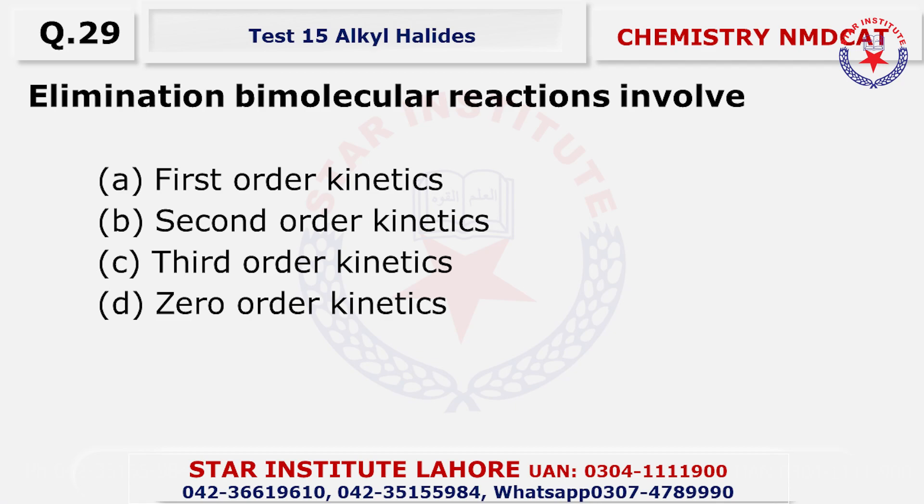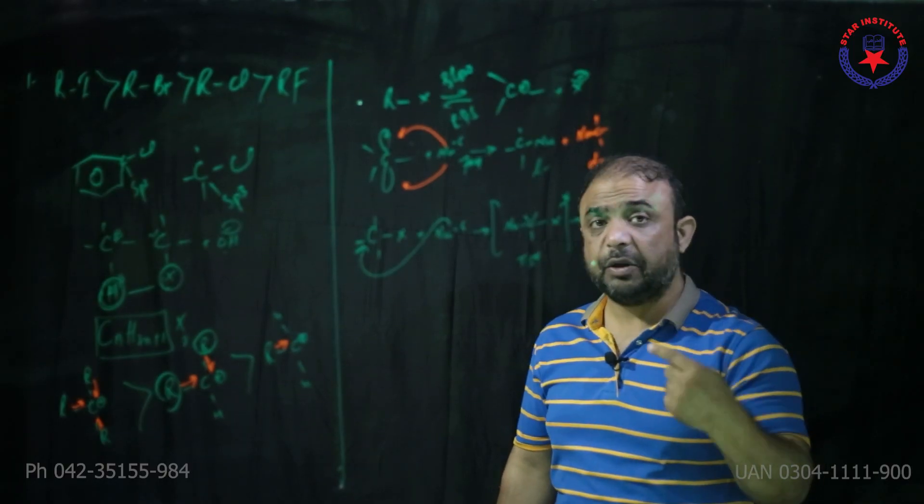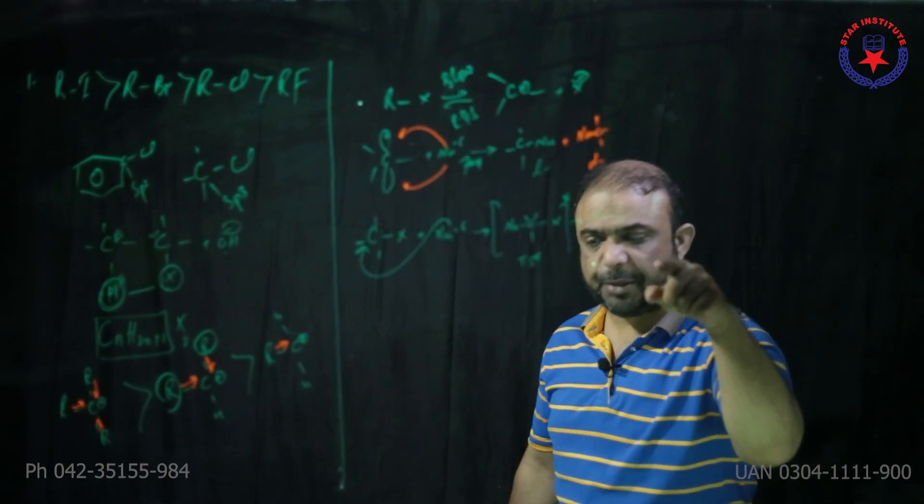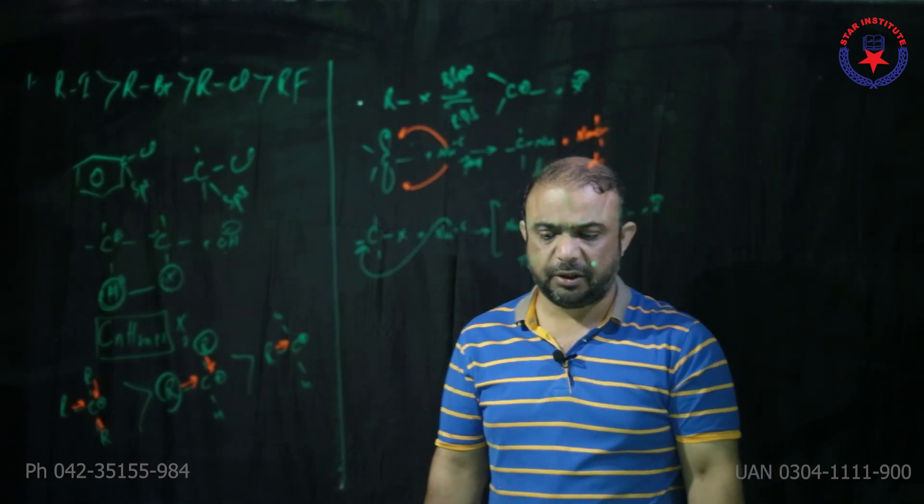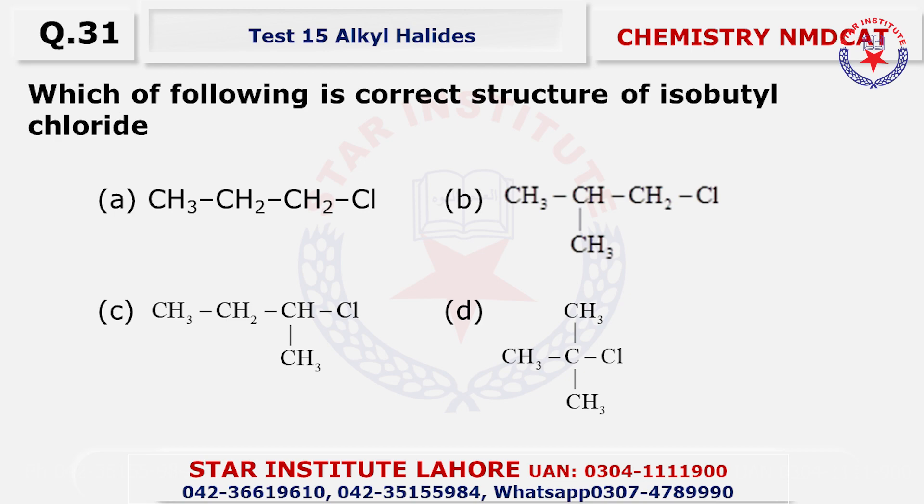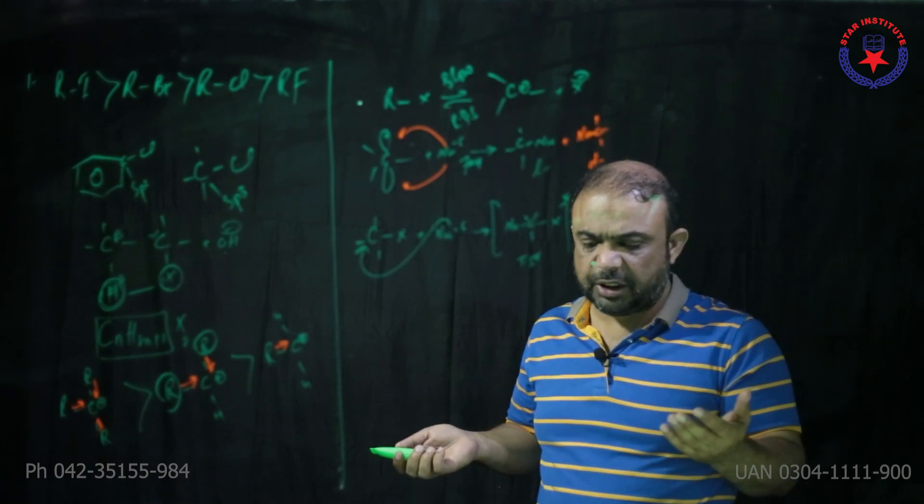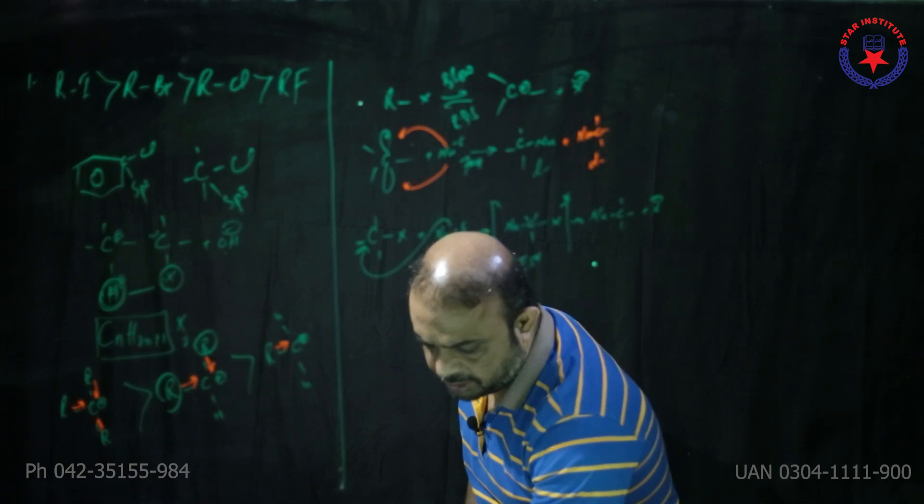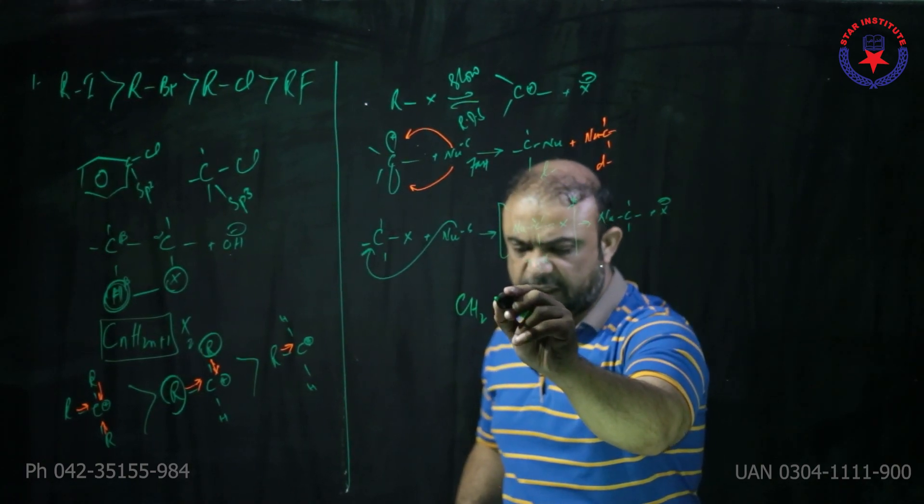Question 29, elimination bimolecular reaction involves, bimolecular keh diya toh molecule 2 wale rahe hain second order kinetics for which mechanism the only step involved. Yeh bataaye ek step ka mechanism kaun se hai, E2 aur SN2 uni stepped hai so the only step involved is E2 and SN2. Question 31, which are the following is correct structure of isobutyl chloride. Isobutyl group laga hua, that is beta. Question number 32, the correct name for this compound is beta, CH2 group laga ho toh ise methylene bolte hain toh zaher hai iske saath 2 chlorine hai toh methylene chloride bolenge.